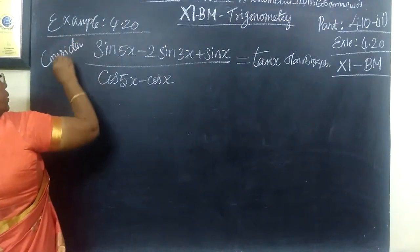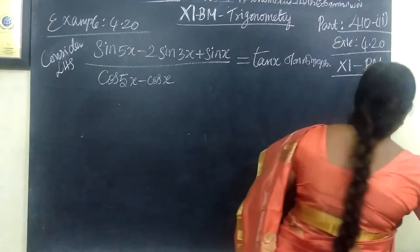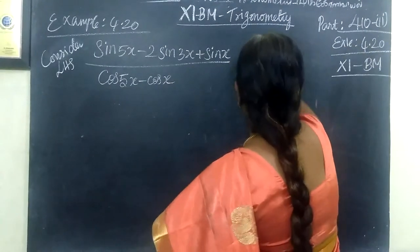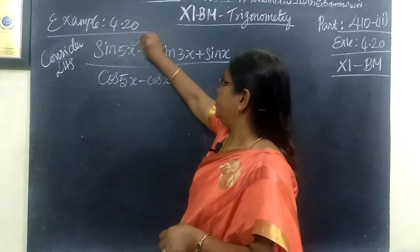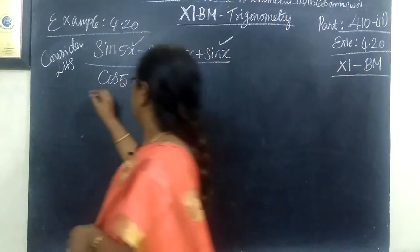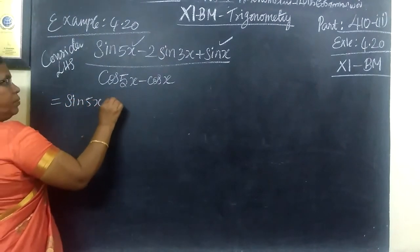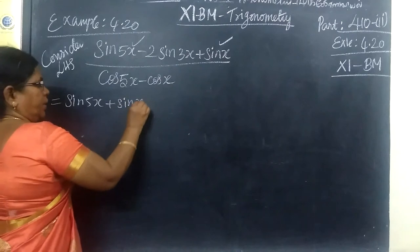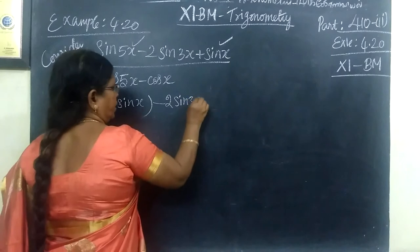Consider LHS, then RHS is tan x. So what do you do? You take first term and last term. That is equal to sin 5x plus sin x minus 2 sin 3x.